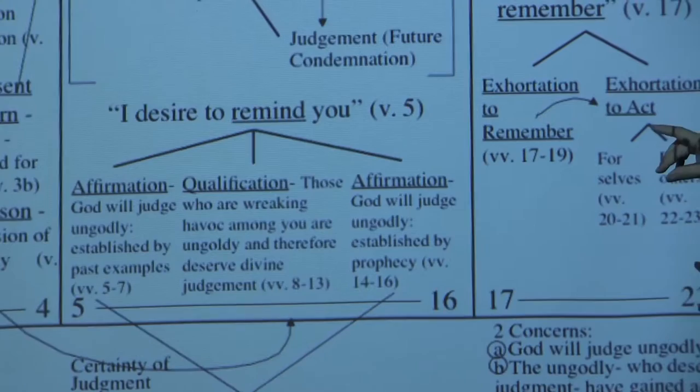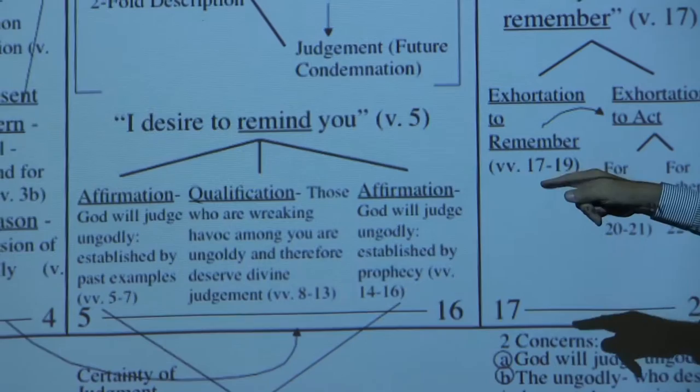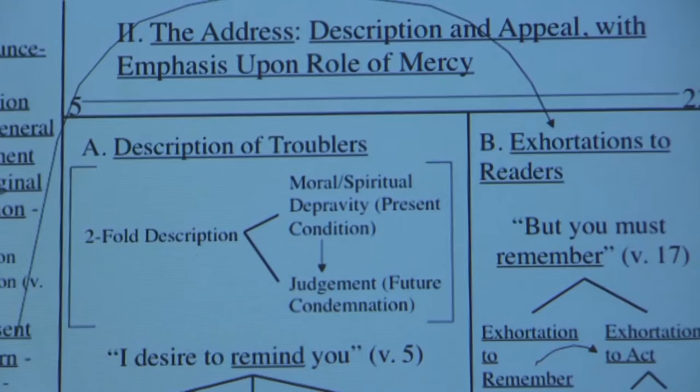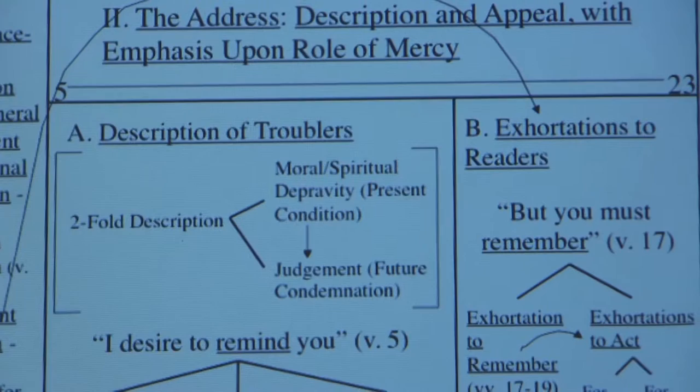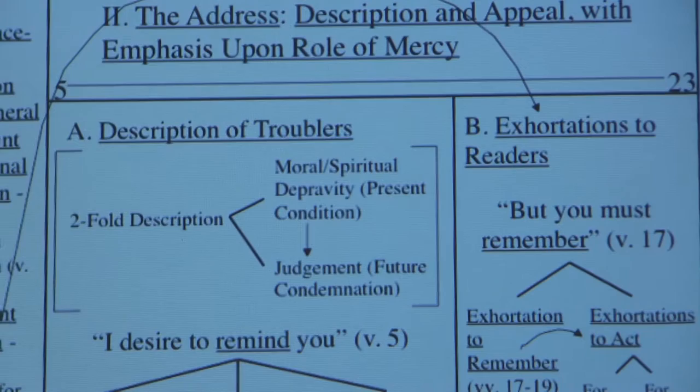In the general statement: A — appeal to contend for the faith, then B — the reason, the admission of the ungodly. Then in the address, he begins with B prime — the admission of the ungodly, and ends with A prime — the appeal to contend for the faith. A, B, B prime, A prime.